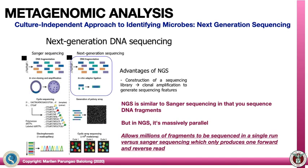NGS is similar to Sanger in that you sequence your DNA fragments. However, in NGS it will be massively parallel, allowing millions of fragments to be sequenced in a single run versus Sanger sequencing, which can only produce about a forward and a reverse read. Sanger sequencing would probably take a day or two for you to sequence what NGS can do in about an hour.